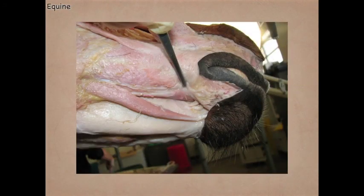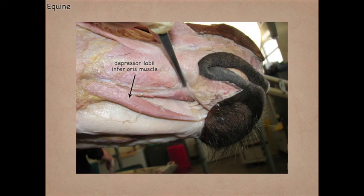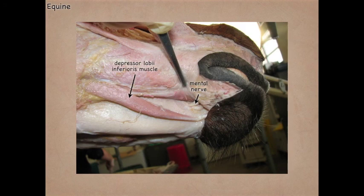Here we see the depressor labii inferioris muscle reflected dorsally to show that generally, just caudal to the caudal margin of the lips, you'll find the mental nerve. This nerve is coming from the inferior alveolar nerve, which innervates the cheek teeth and continues within the canal to innervate the lower incisors. The mental nerve goes to the lower lip and chin. Because this is from the mandibular nerve, this is going to be sensory.